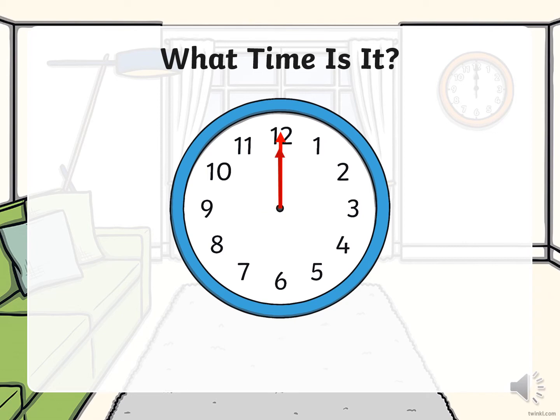Oh goodness! What is happening now? Both of the arms are pointing to the same number. But don't worry — the same rules apply. If the long arm is pointing to the 12, that means o'clock. And then we look at where the short arm is pointing, and it's also pointing to the 12. So that means it is 12 o'clock.